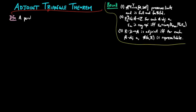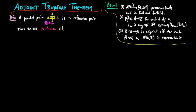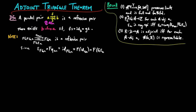We start with the definition. A parallel pair f, g is a reflexive pair if and only if there exists a morphism s such that fs equals the identity on b, which equals gs. In other words, s is a common section for f and g. Note that for an adjoint situation f, g with counit epsilon, the pair epsilon fga and fg epsilon a is a reflexive pair by the triangle identities for the adjoint situation.